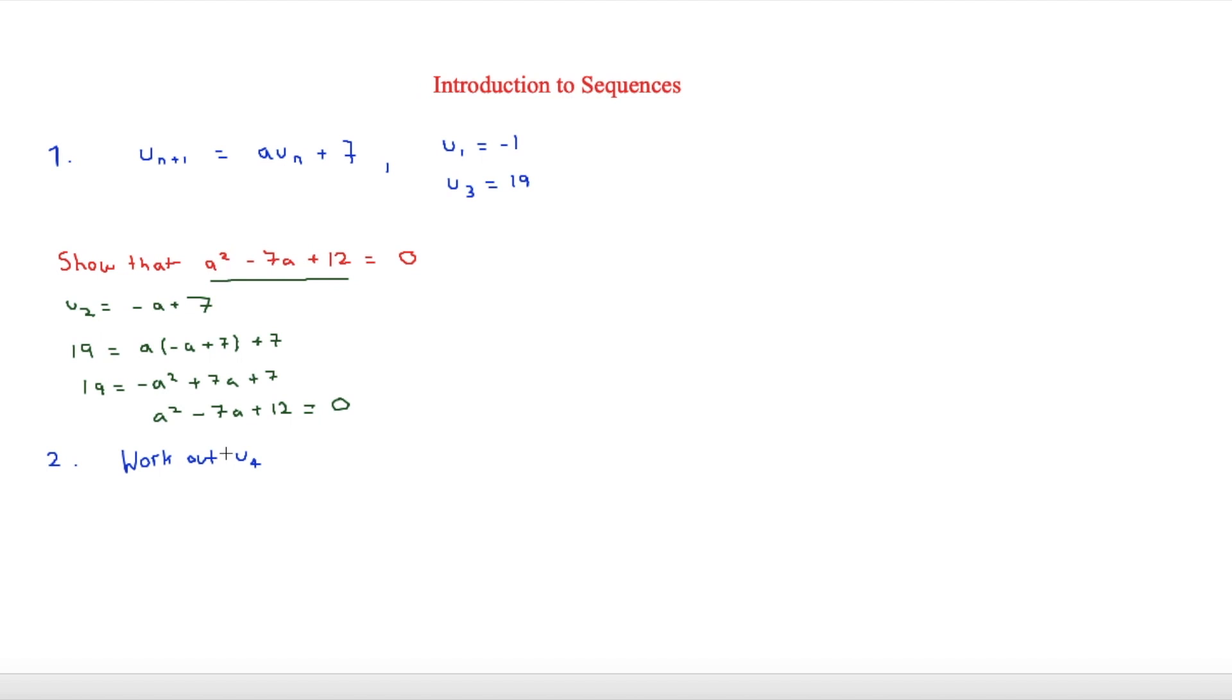So the next thing it asks is to work out u4. We're going to get two answers for this. And that's because we're going to take a squared minus 7a plus 12 and find out what a is. To do that, we're going to say a minus 4 and a minus 3 is equal to zero. So that means that a is equal to 4 and a is also equal to 3.